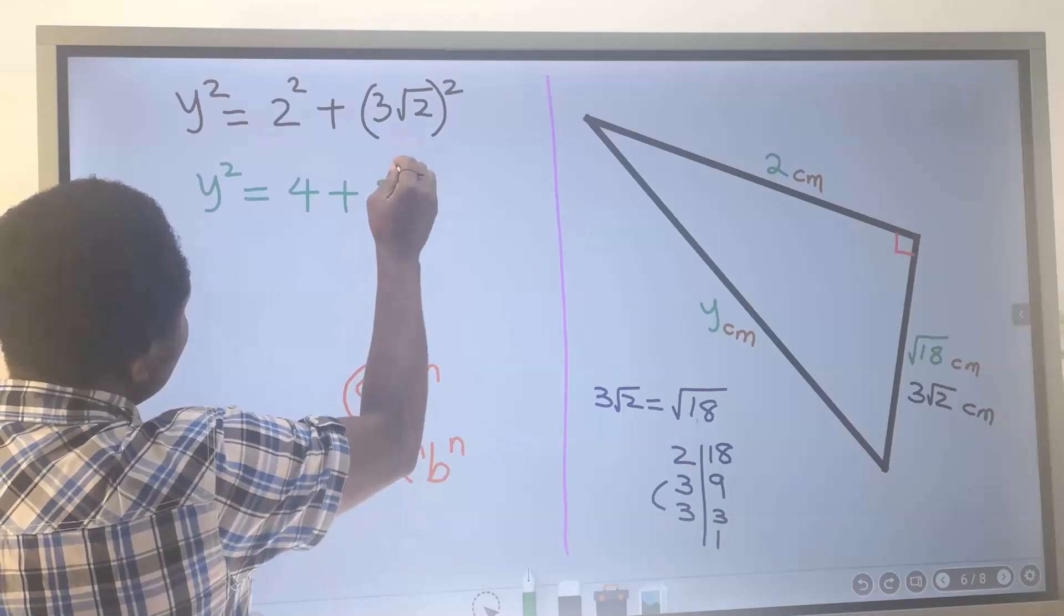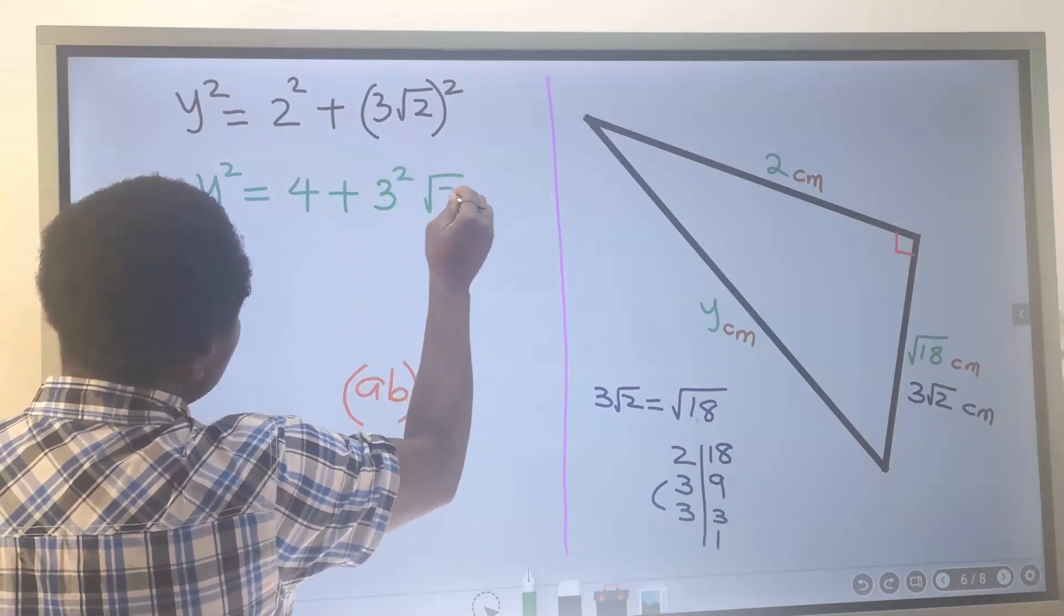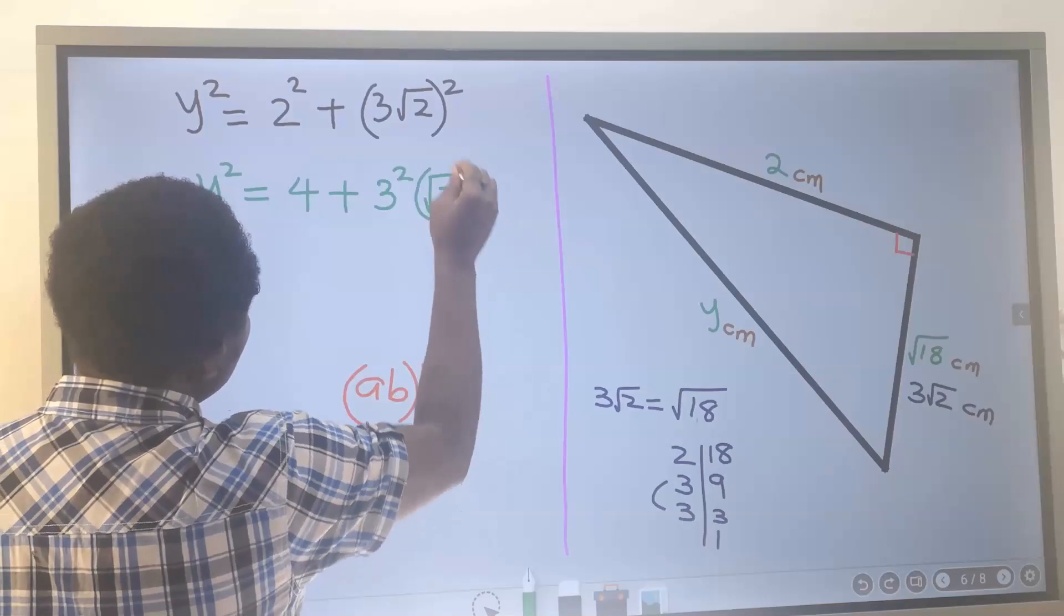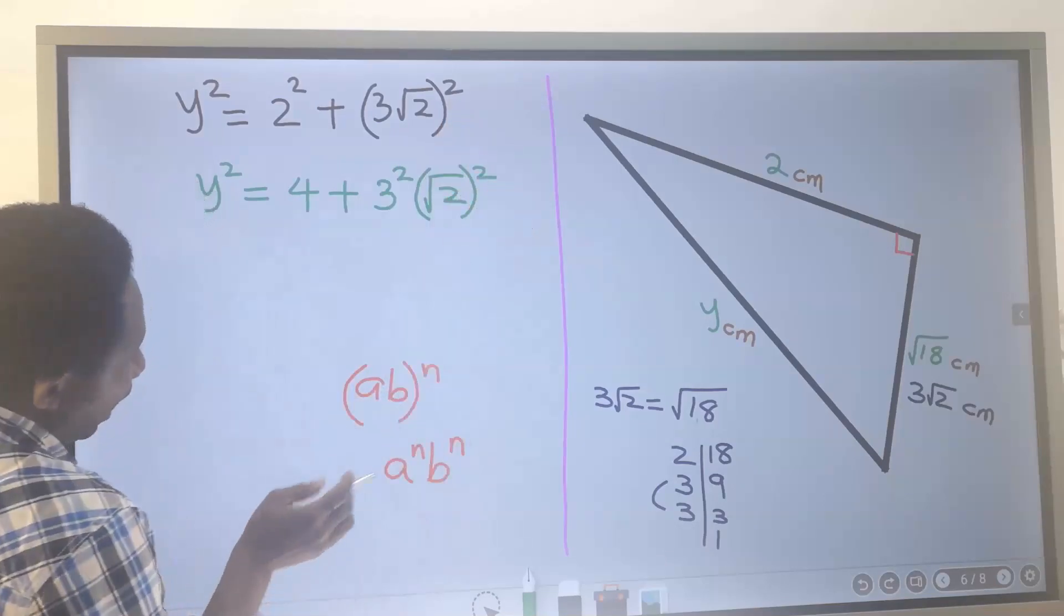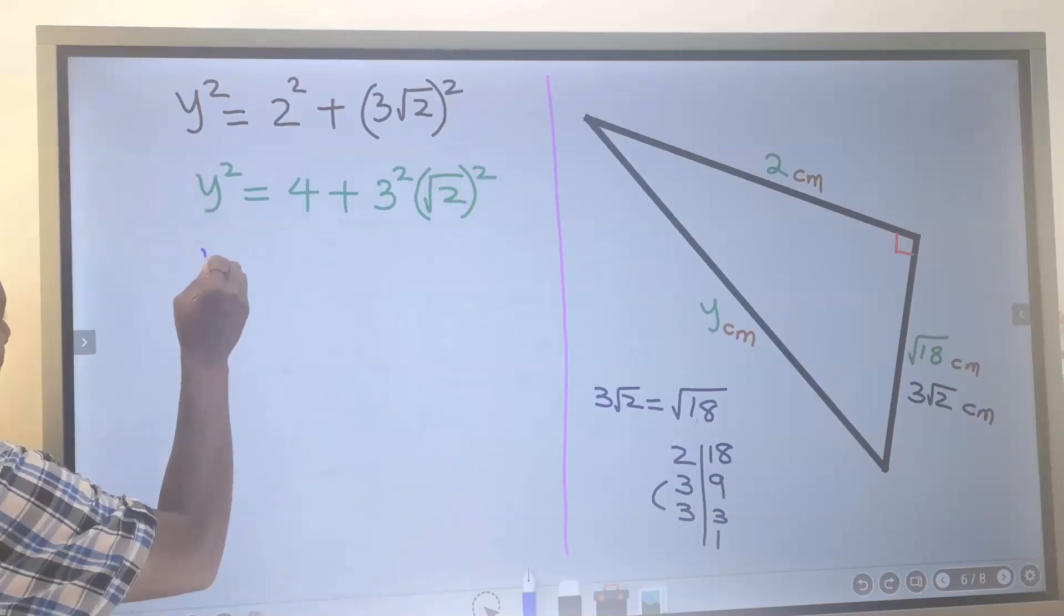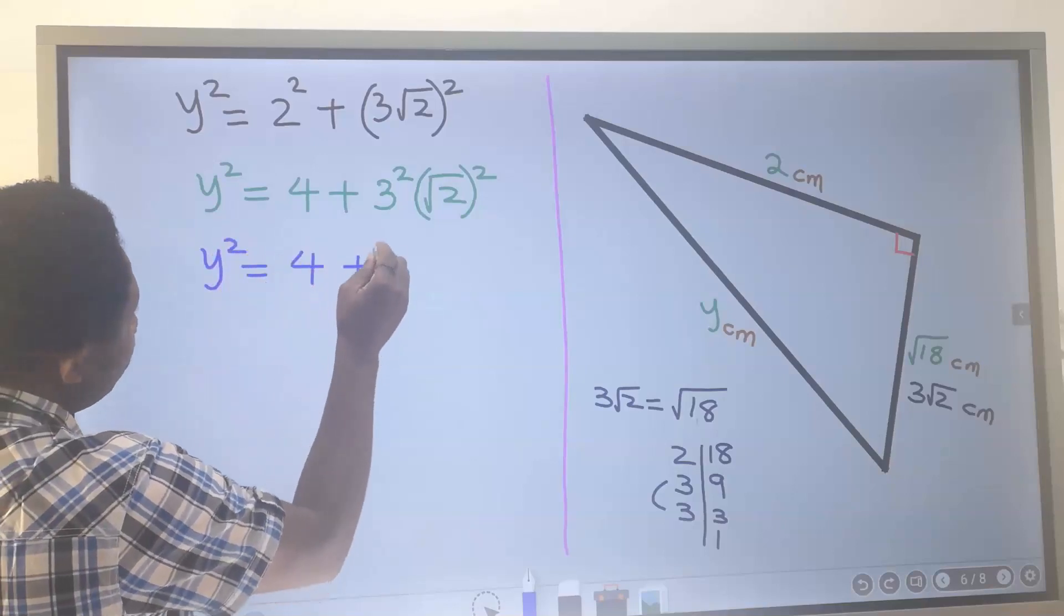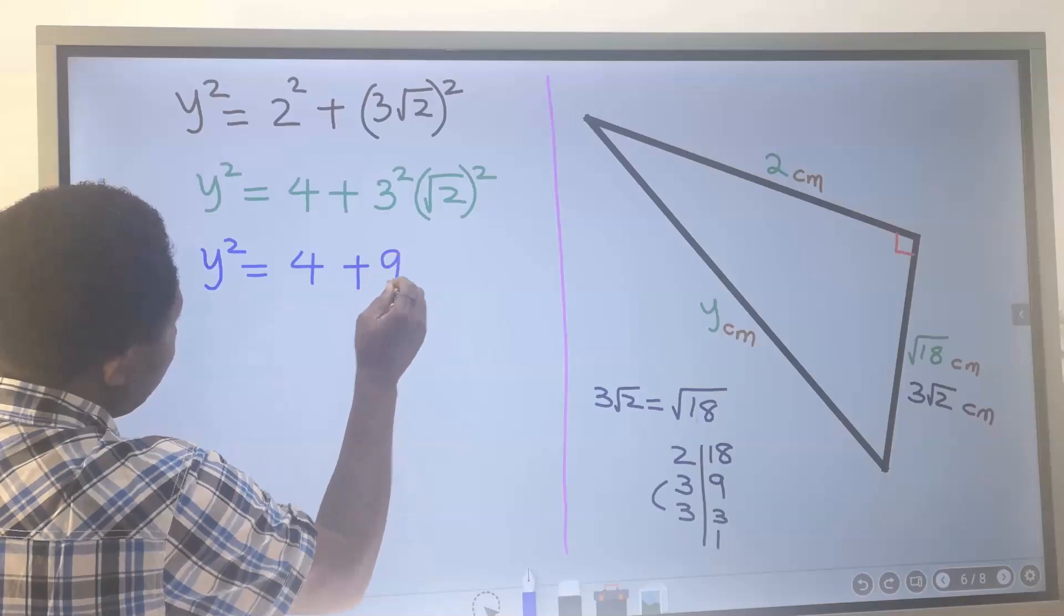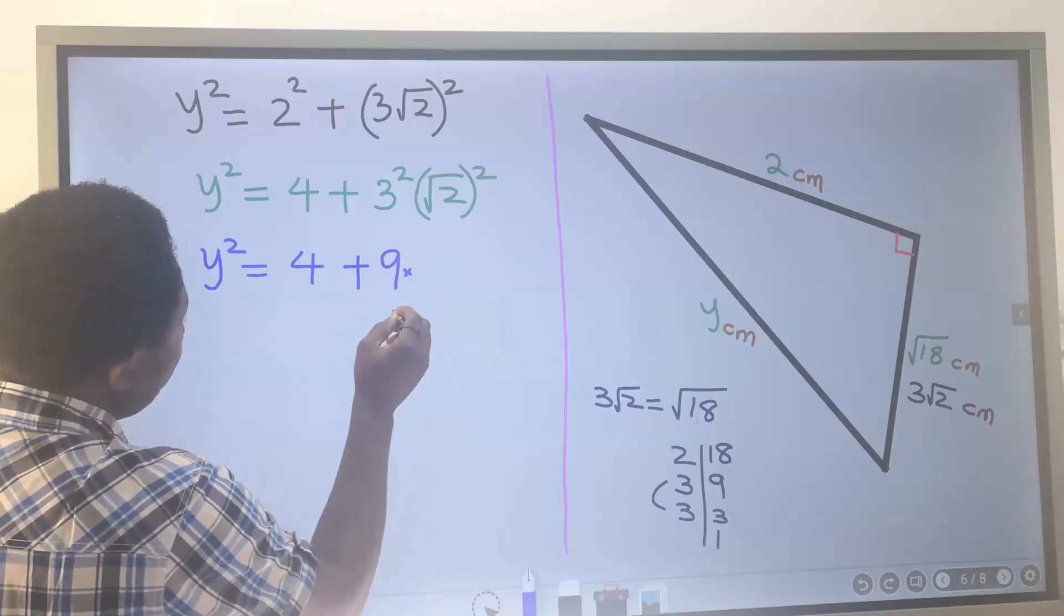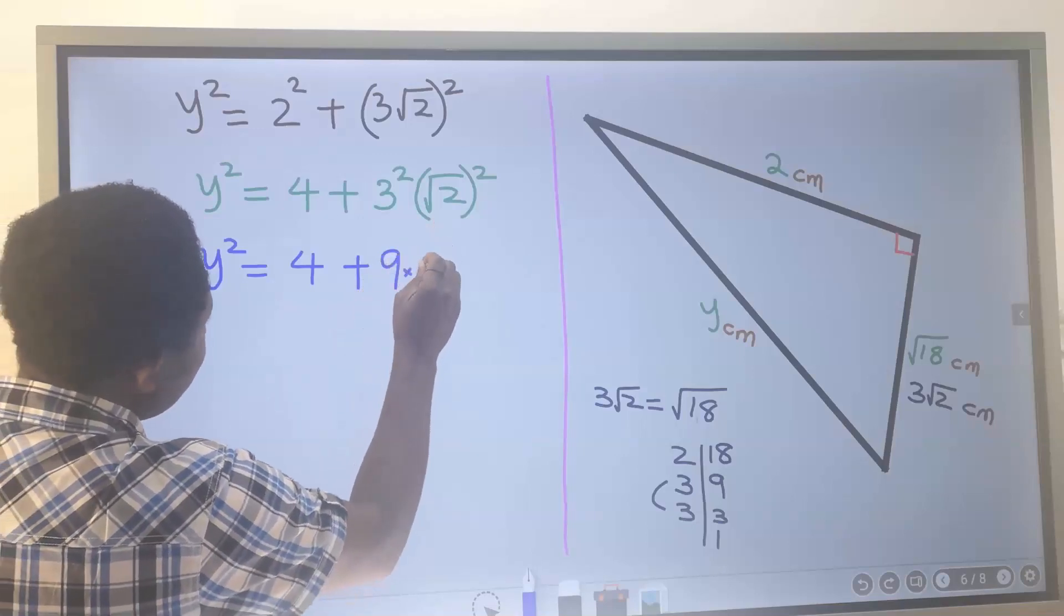I'm going to apply this law to this. I'm going to have 3 to the power of 2 and the square root of 2 all to the power of 2 according to this law.